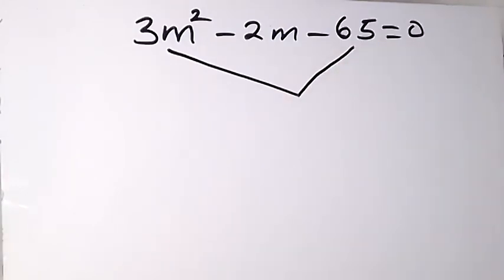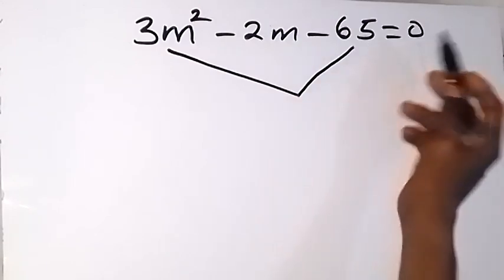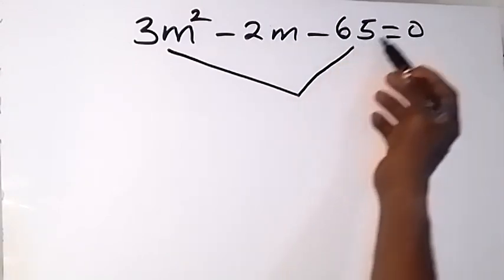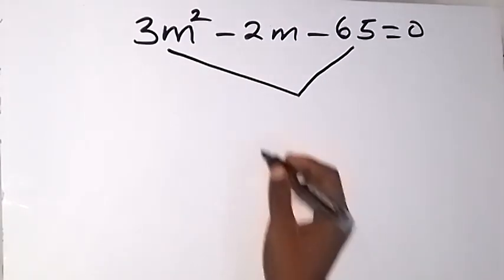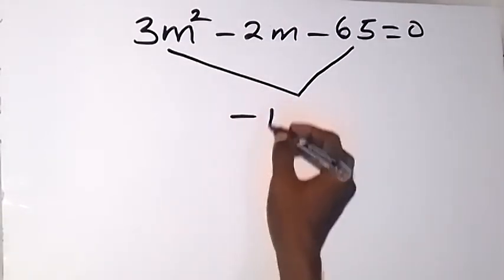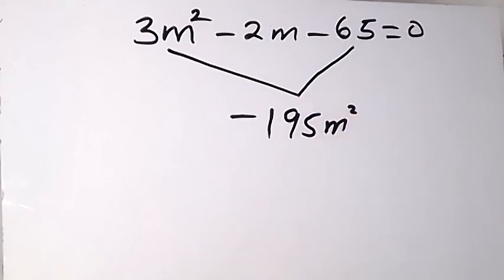So 3m² times -65. Because we have -65 here and 3m² here, when we multiply that we will get -195m².